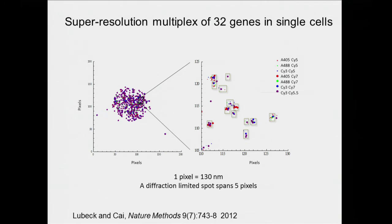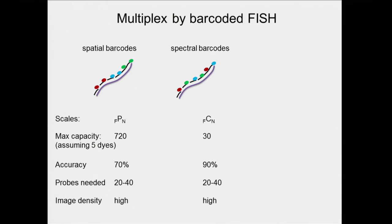We did a proof-of-principle experiment where we imaged 30 genes simultaneously in single E. coli cells, barcoding different transcripts and resolving them with super resolution — each cluster is one mRNA molecule. To distinguish different RNA types, we used different mixtures of colors: RNA type one is red-green, RNA type two is green-blue, and so on. This leads to the second problem: how do you increase the multiplex capacity? We have about five or six different fluorophores available with fluorescence microscopy, so using color combinations it's very hard to scale beyond 30 different barcode types — this is what we call spectral barcoding.